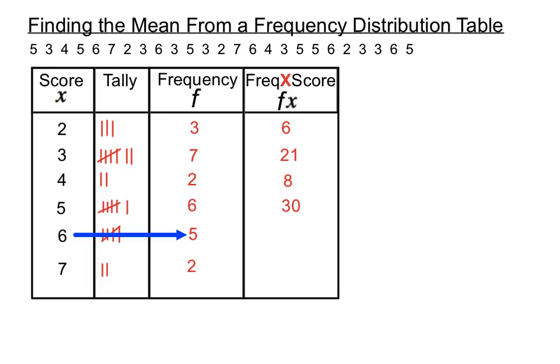And 5 scores of 6 adds 30 also to the total. And 2 scores of 7 adds 14 to the total. So we've got the fx column filled in there.